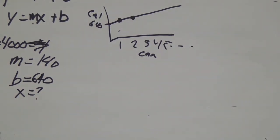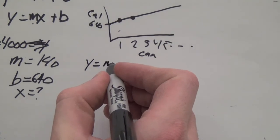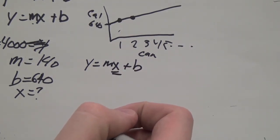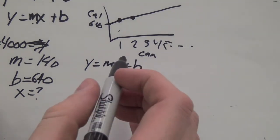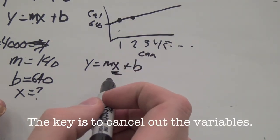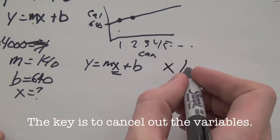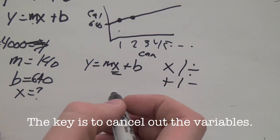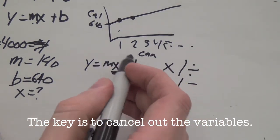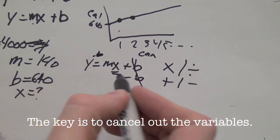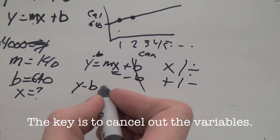Here's rule number one: do not start plugging numbers in until you've manipulated the formula. We're going to do that right now. Y equals MX plus B. Whatever you do on one side of the equal sign, you must do to the other in order to cancel out variables. You cancel out by opposites — if something is being multiplied, the opposite is division; if something is being added, the opposite is subtraction. So let's start here. Plus B — in order to cancel that out, we have to minus B. If we minus B from this side of the equation, this cancels out. B minus B is zero. But we've got to minus B from Y too.